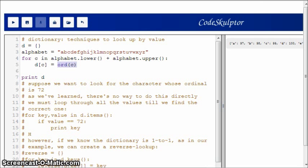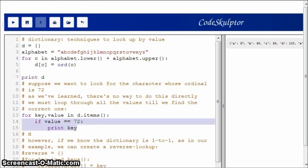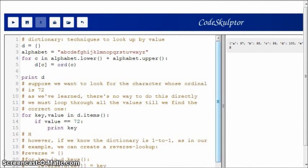Because there's no way to look up the key value using the value, we have to loop through the dictionary. We have to loop through all the key value pairs. When we find the value we're looking for, we get the key. In this case, we're just going to print it. When I run this, you'll see that the value it finds is H.